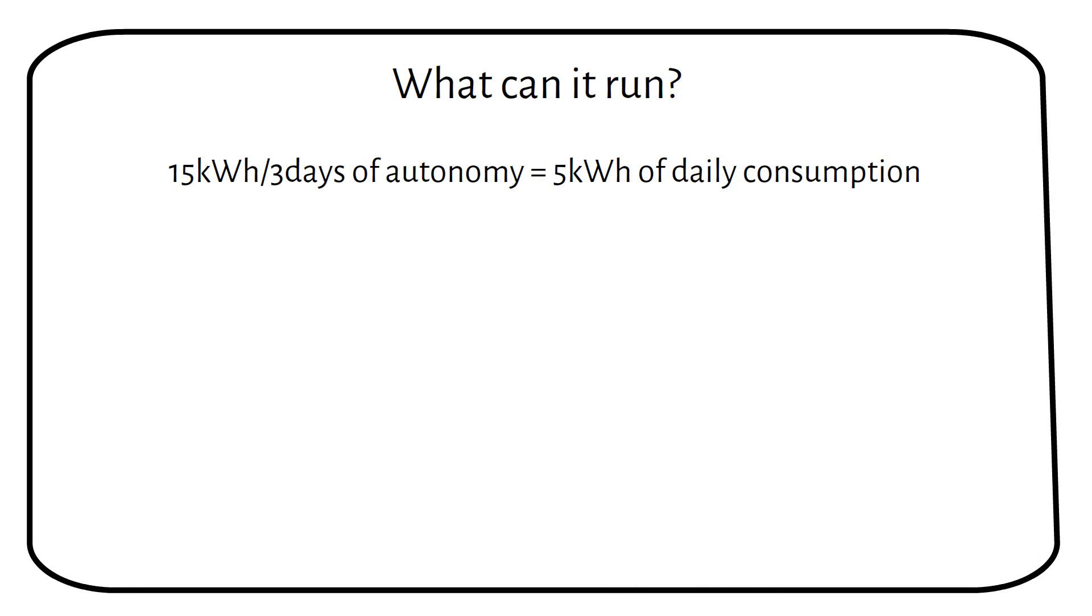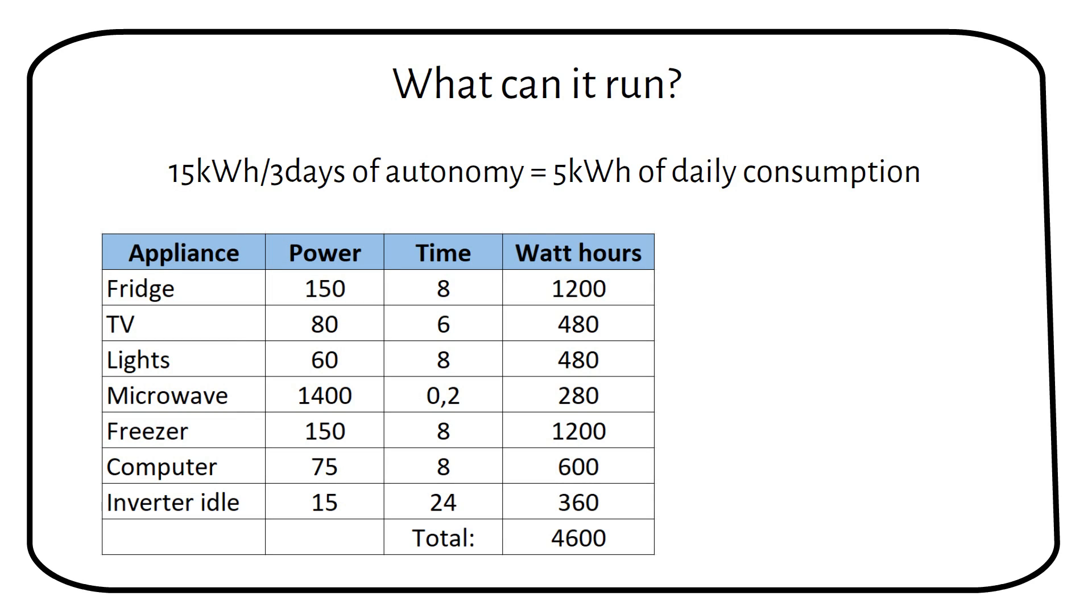In this load analysis, we can use a fridge, a TV, several lights, a microwave, a freezer and a computer. Lastly, we have to factor in the inverter idle power consumption. We become a daily energy usage of 4600 Wh. As you can see, it's not much for 5 kW of solar.